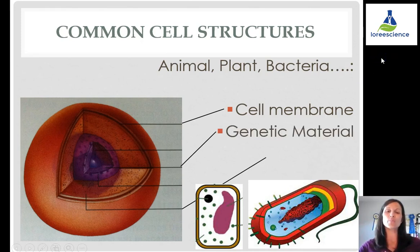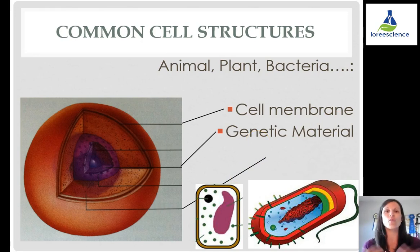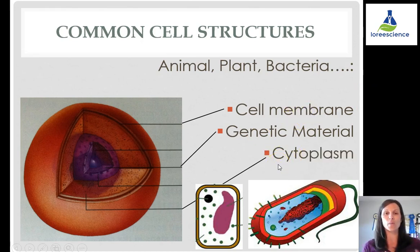There's also some sort of genetic material. Sometimes it's in a nucleus, sometimes it's not, but the genetic material contains the instructions for that cell to do whatever it needs to stay alive. And lastly, there is a cytoplasm in all cells, because without the cytoplasm, the cell would collapse upon itself.